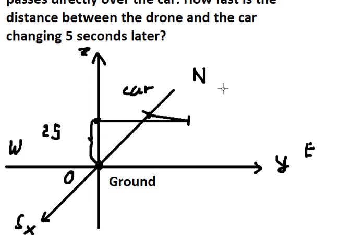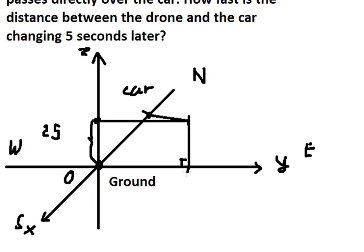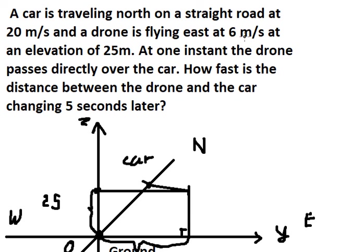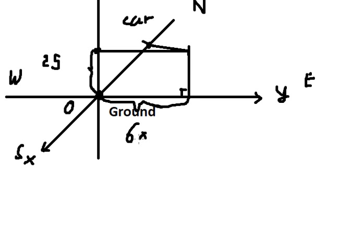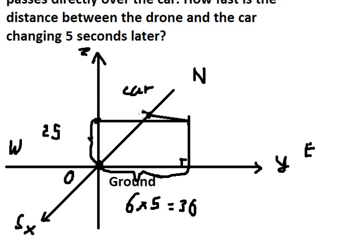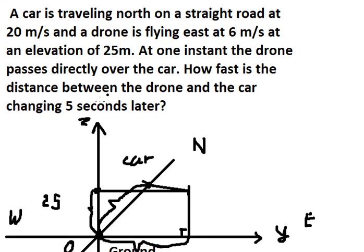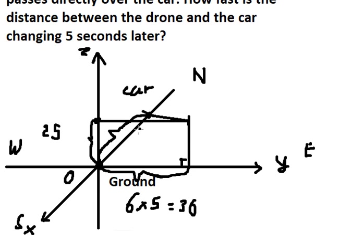Between after five seconds — we know that from the road we put this one going down on the right. After five seconds we can find from zero to this point. The road goes at 6 meters per second, so after five seconds: 6 multiplied by 5 equals 30. For the car, we calculate the new distance: 5 seconds multiplied by 20 equals 100.